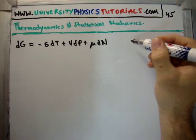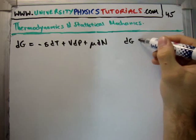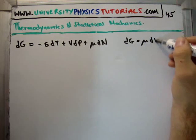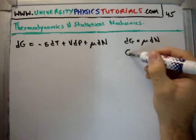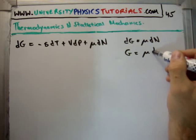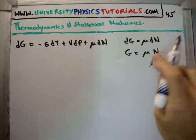So we saw in a previous video that dG can also be written as μ times dN. Or that if we integrate this we get the Gibbs free energy per particle is equal to the chemical potential for that reason.